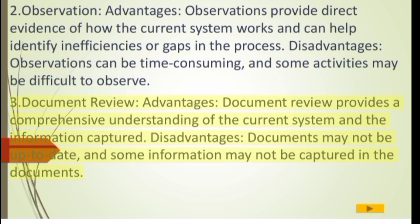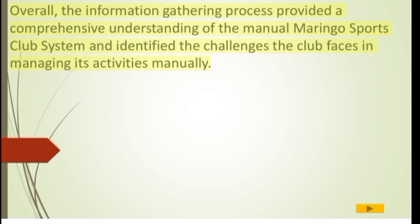Method 3 — Document Review: Advantage: document review provides a comprehensive understanding of the current system and the information captured. Disadvantage: documents may not be up-to-date and some information may not be captured in the documents. Overall, the information gathering process provided a comprehensive understanding of the manual Moringo Sports Club system and identified the challenges the club faces in managing its activities manually.